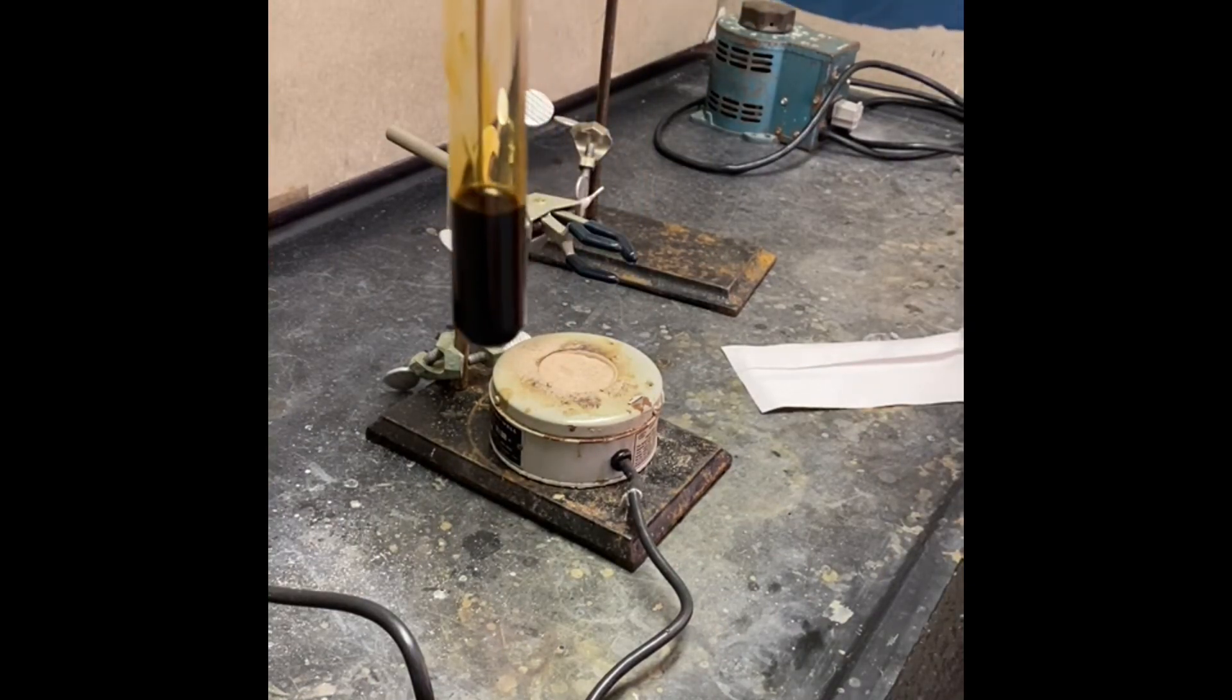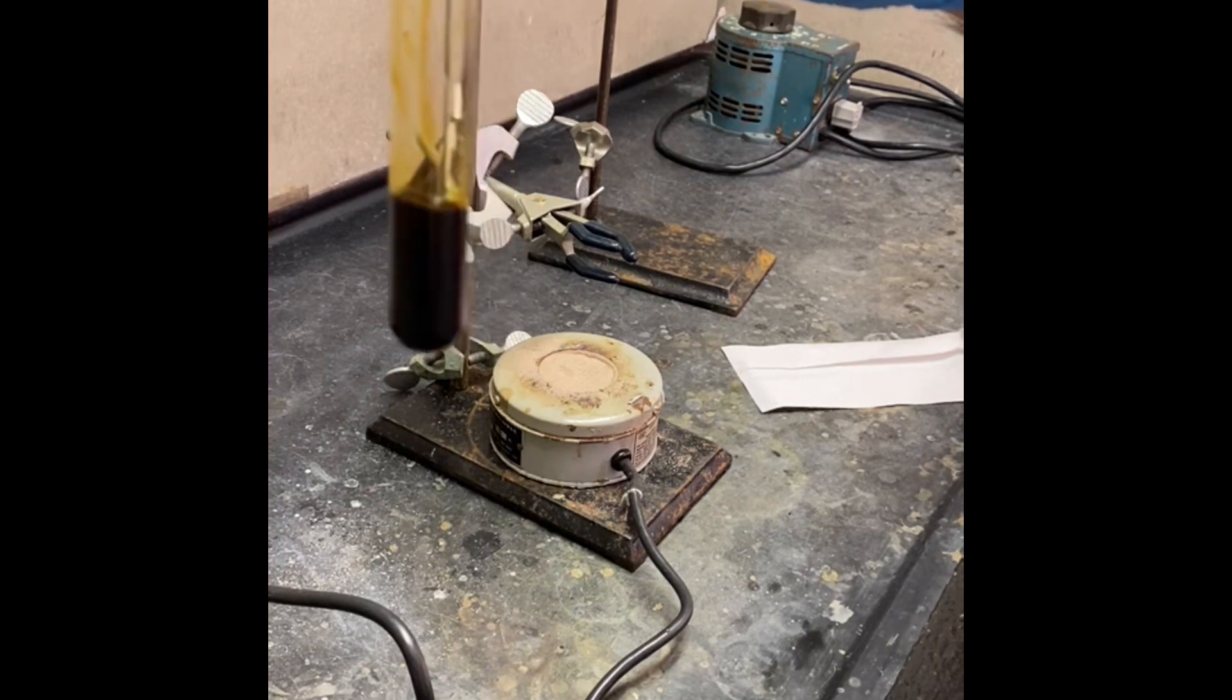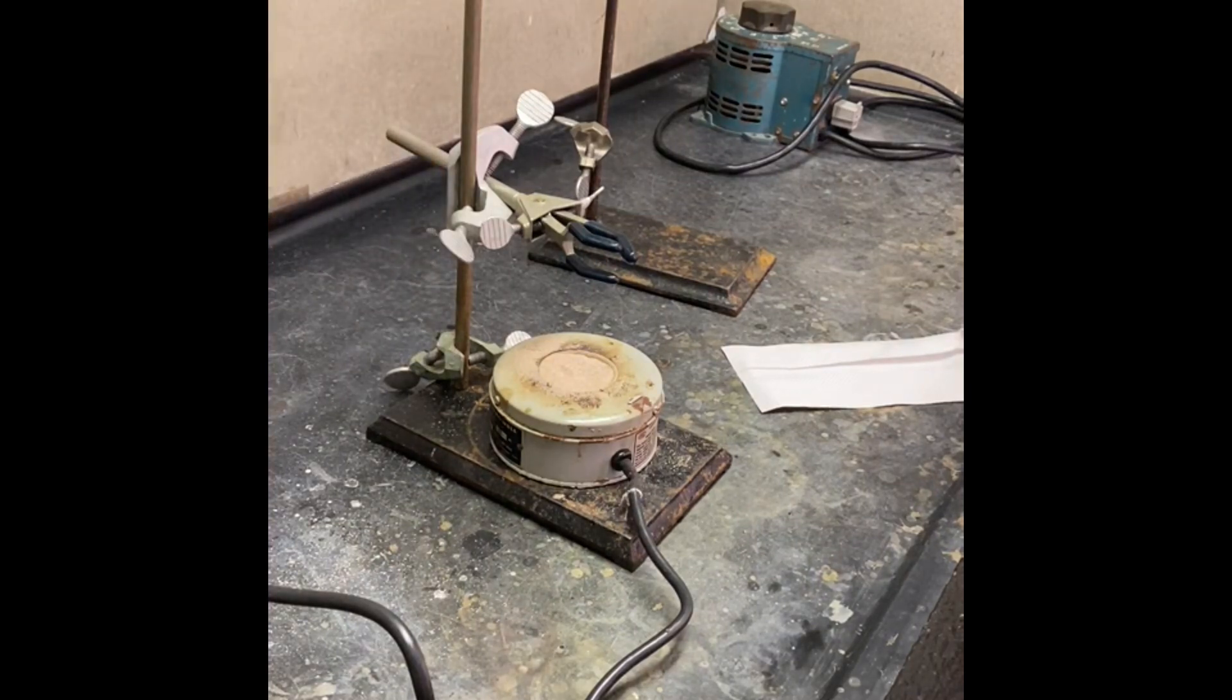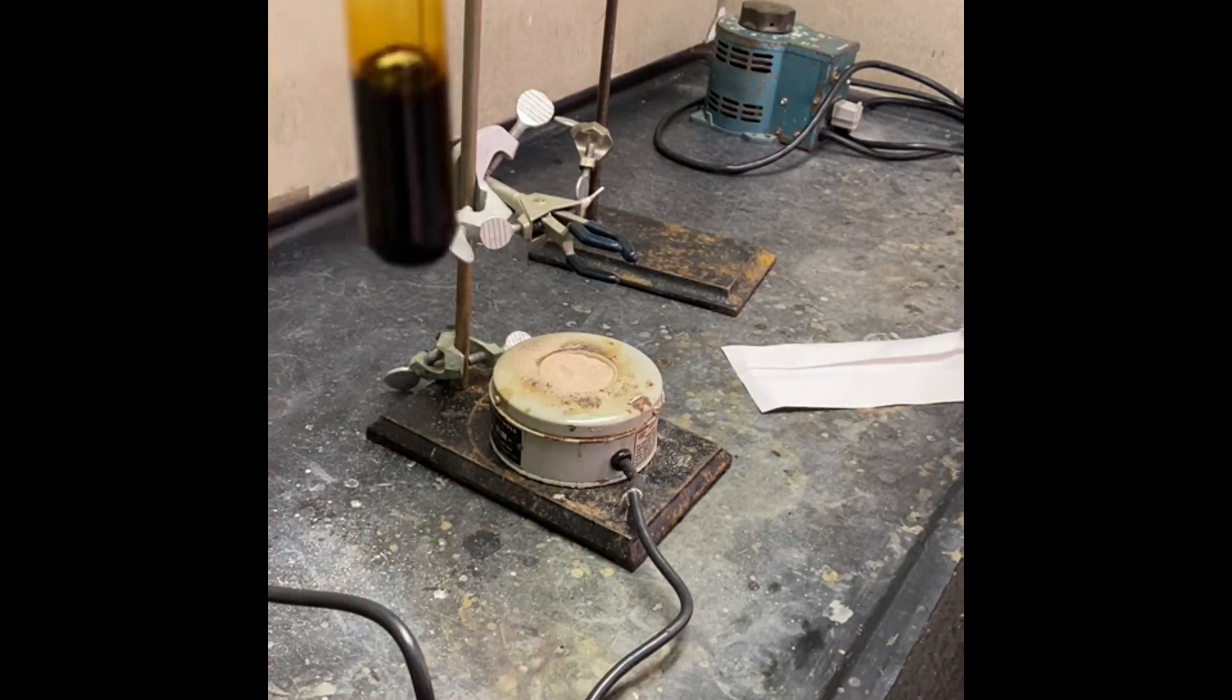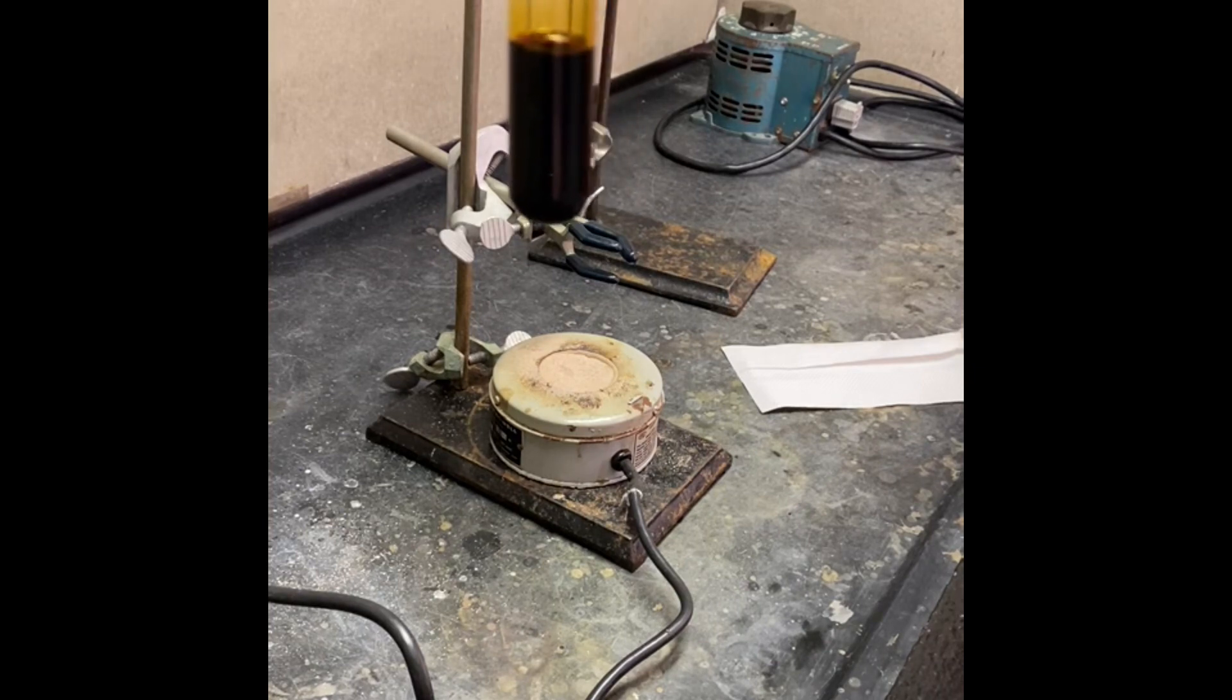We put back to the same reaction flask the first reaction product and added 5 mL sodium hydroxide. As you're seeing, it's a dark color now. In the tube right now I have the first reaction product and 5 mL sodium hydroxide.